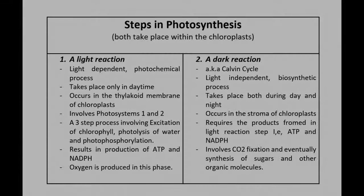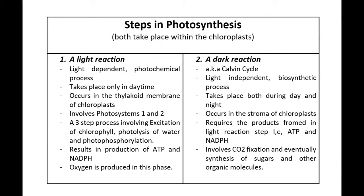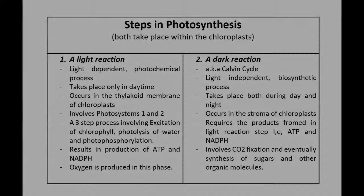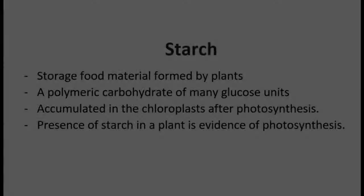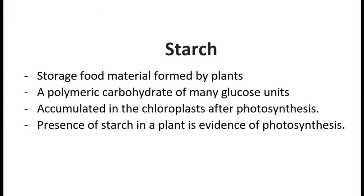Photosynthesis occurs in two major steps, both of which take place within the chloroplasts: a light reaction and a dark reaction. Starch is eventually formed as a reserve food by plants at the end of a photosynthetic process.